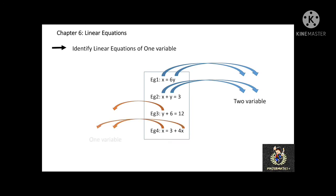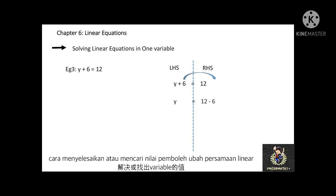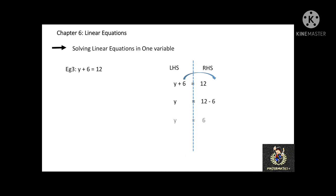Now, we will solve linear equations in one variable — another way to say this is: find the value of the variable in an equation. What I usually do is put the equal sign in the center. In this case, y plus 6 equal to 12. Put y plus 6 on the left-hand side and 12 on the right-hand side. Then group the variable on the left-hand side and numbers on the right-hand side. Take note: for plus 6, when you move it to the opposite side, the positive symbol must change to negative. Similarly, when a negative or minus moves to the opposite side, it must change to positive or plus.